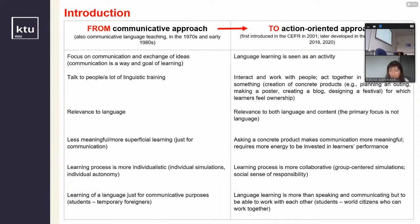This table summarizes why we should be moving from communicative approach to action-oriented approach. In the communicative approach, there is focus on communication and exchange of ideas — communication is both a way and a goal of learning. Whereas in the action-oriented approach, language learning is seen as an activity. While there is much linguistic training in the communicative approach, in the action-oriented approach there is interaction and working with people. Learners are asked to act together in order to produce something — create concrete products, for example, planning an outing, making a poster, creating a blog, or designing a festival. For these artifacts, they feel ownership.